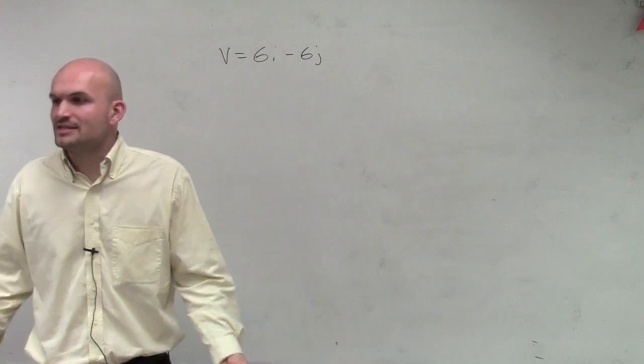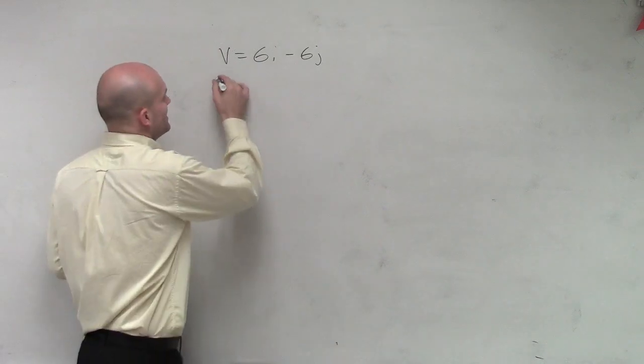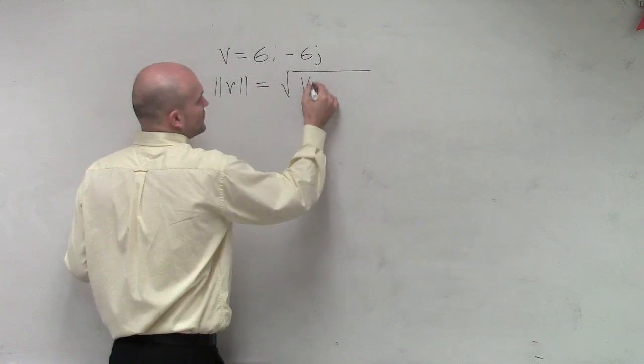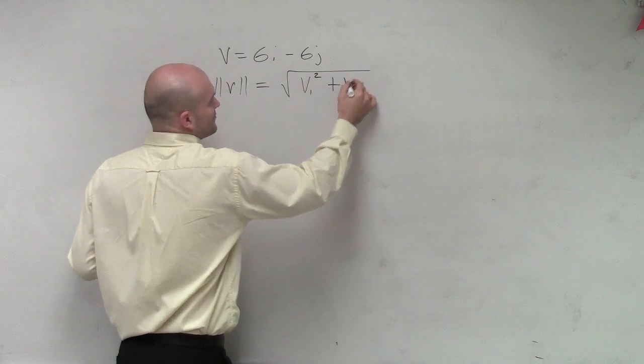So first of all, let's just go back to the magnitude. What is first the magnitude of v? Well, the magnitude of v, remember, is v1 squared plus v2 squared.